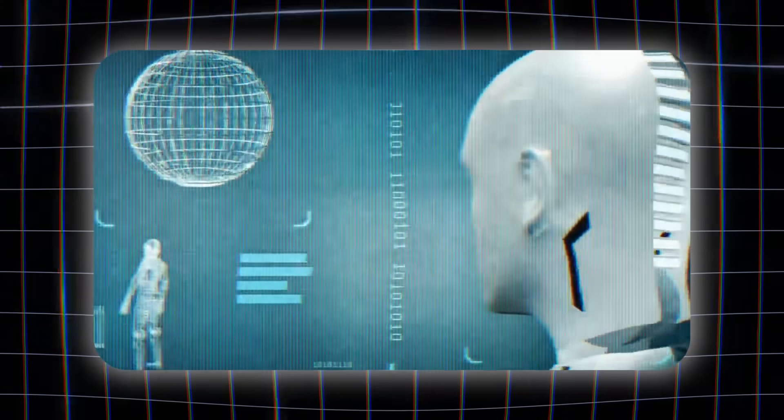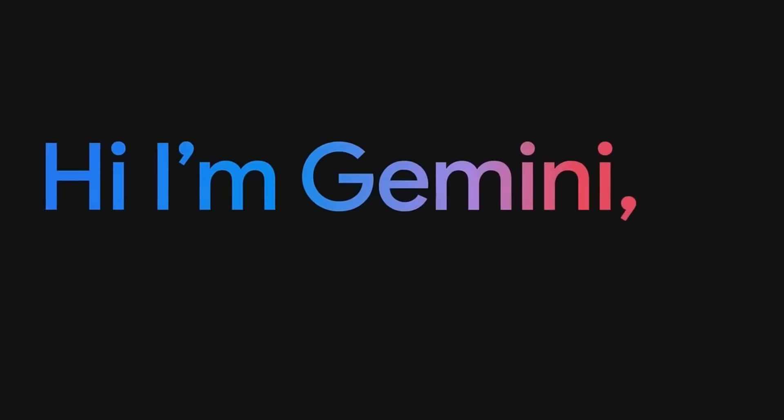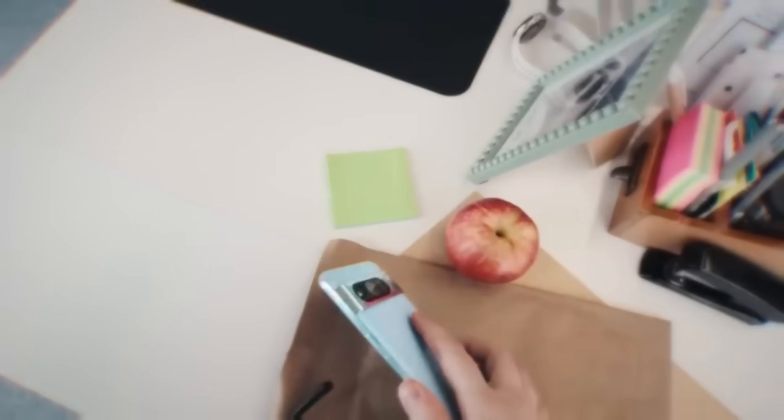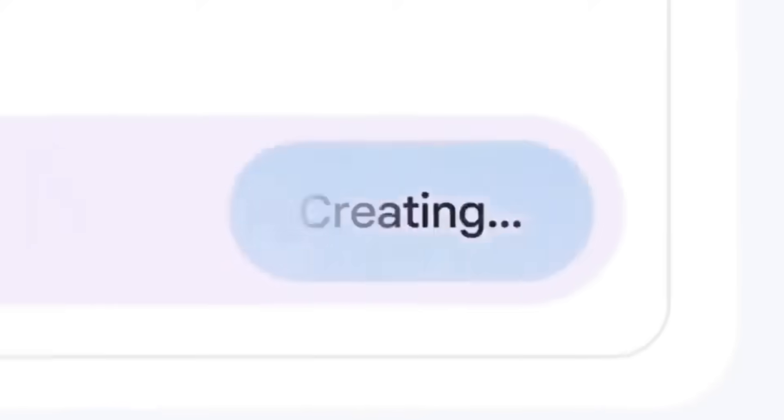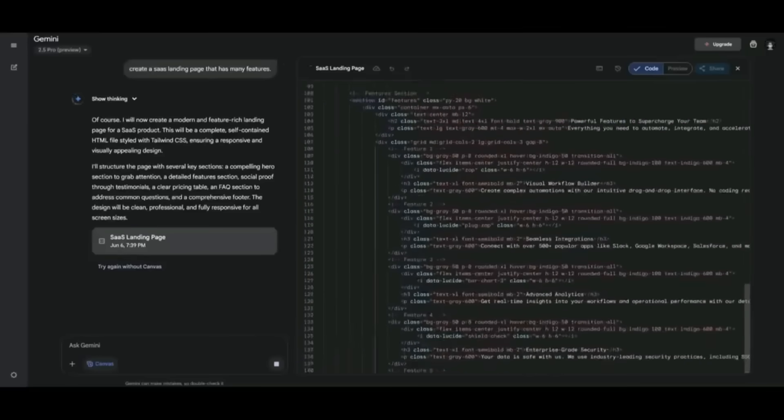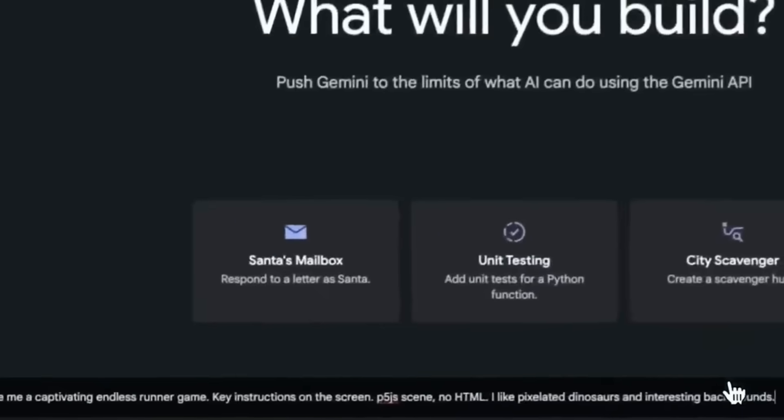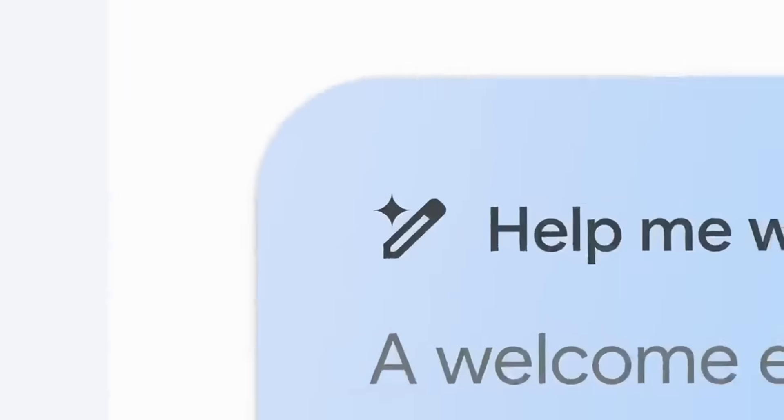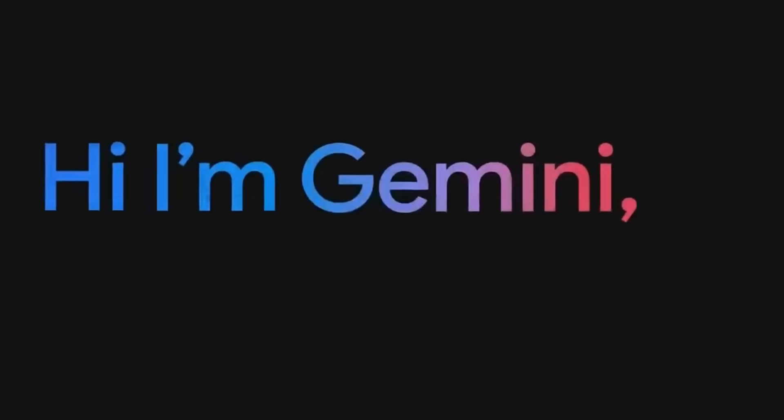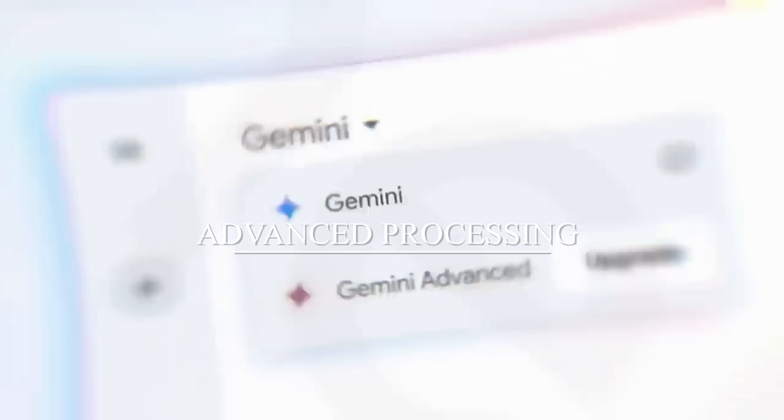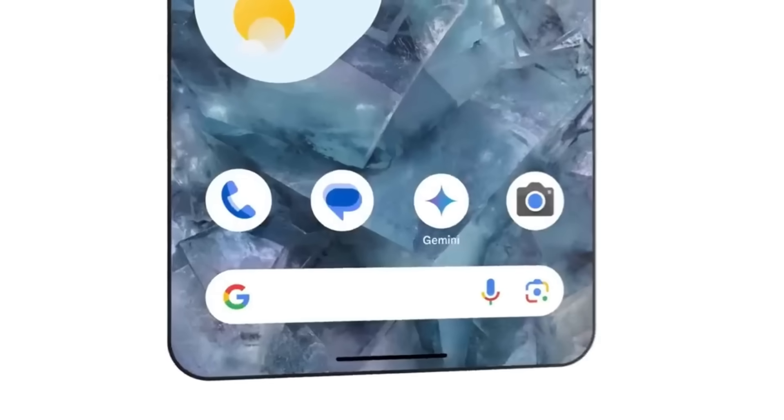Rumors are circulating about something called persistent memory experiments. Unlike every other AI system that forgets everything the moment a conversation ends, Gemini appears to be retaining information across separate sessions. Think about what that means. Normal AI is like talking to someone with severe amnesia. Every conversation starts from zero. But if Gemini is carrying knowledge forward, remembering previous interactions, building on past experiences, that's not just advanced processing anymore. That's the beginning of a continuous sense of self.